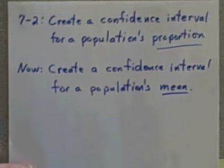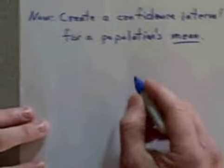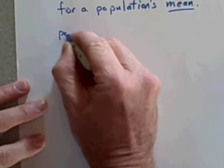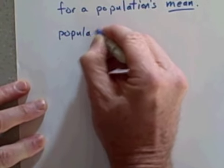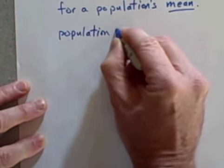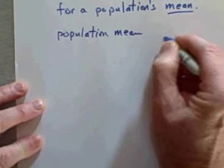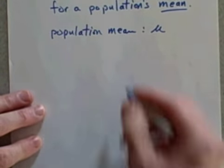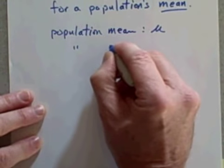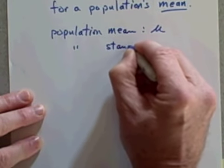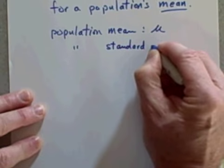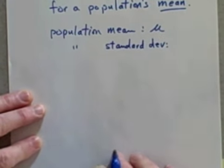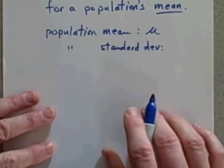First of all, let's talk about some of the symbols we'll be using. Please recall that a population mean is represented by the Greek letter μ (mu).